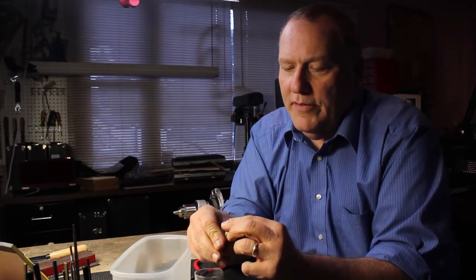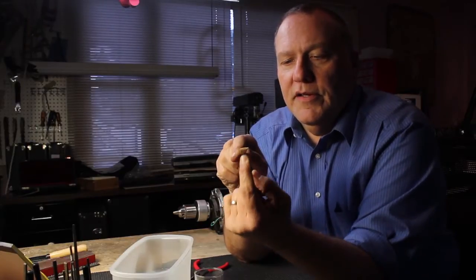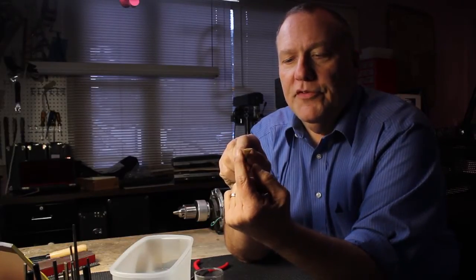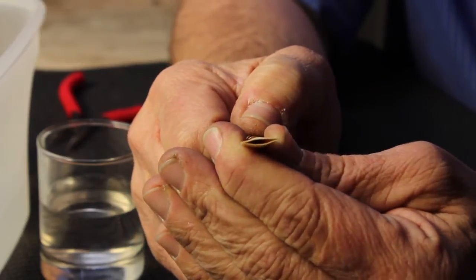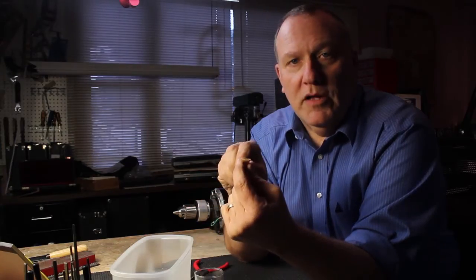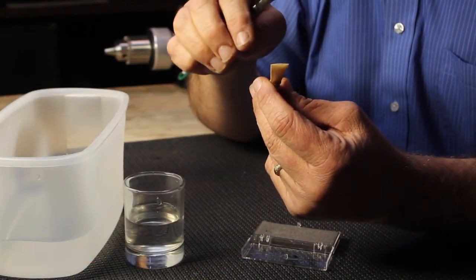Once your reed is nice and wet, the opening should be something like this where you can see the tips have now closed, it has a kind of smile-like feature, and it may be—let's see—this one a little bit too open. So now it's time to adjust the reed so that the opening is correct.